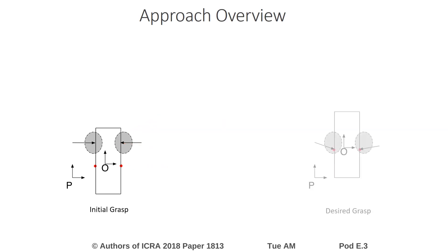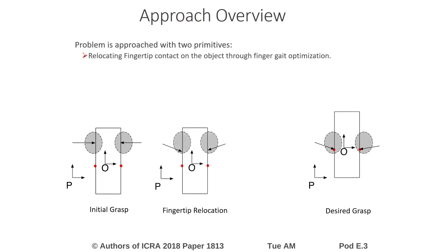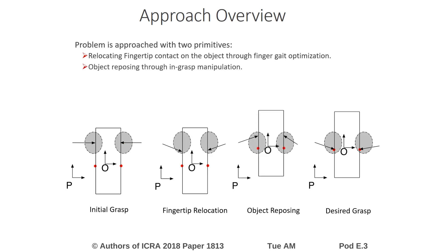Given the initial grasp and the desired grasp, we approach the problem with two in-hand manipulation primitives: fingertip relocation through finger gait optimization, and object reposing through in-grasp manipulation.